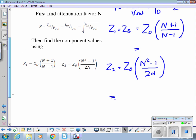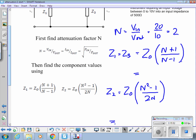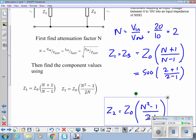Right gents, what we got then? N is the same because there's still 20 over 10. So this is going to be 500 times 2 plus 1 over 2 minus 1. What value do we get there? 1500 ohms. Z1 and Z3, 1500 ohms.